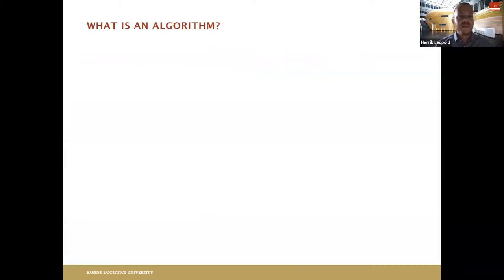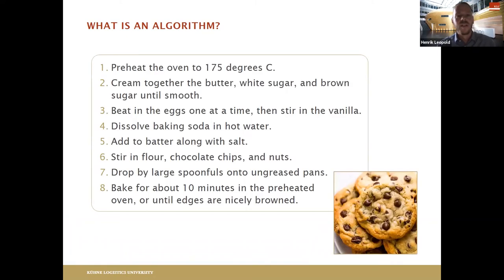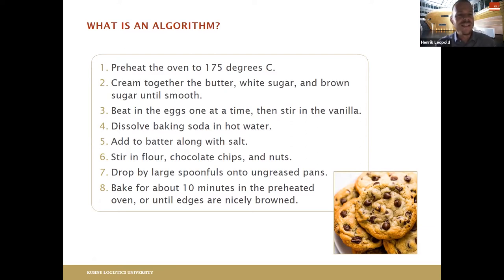Let me start right away with a question — to address the elephant in the room, so to say. What is an algorithm? Maybe you think that's a very trivial question, but in fact, to many people this question is not easy to answer. Just to make sure we are on the same page, let me answer it. What you see here are eight steps, and if you follow these eight steps — if you execute this algorithm properly — you hopefully end up with the cookies you can see at the bottom.